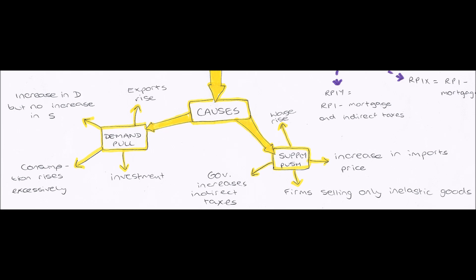So what are our real supply-push causes of inflation? Well, if firms sell only inelastic goods, then inflation will occur. This is because an inelastic good is one where demand does not change much if there is a change in price. So businesses selling inelastic goods know that they can increase their price repeatedly but they won't lose much demand. So if they are increasing their prices, there is a sustained rise in prices, and therefore inflation occurs.